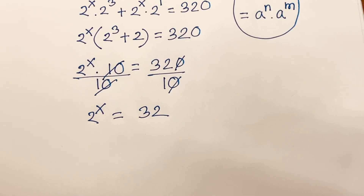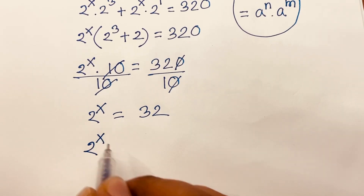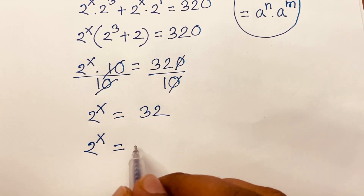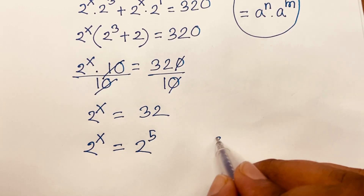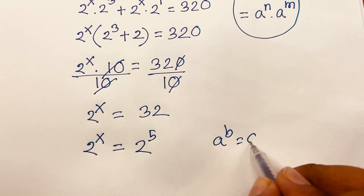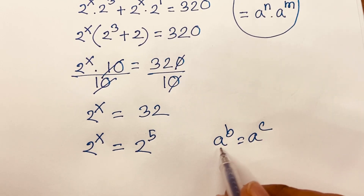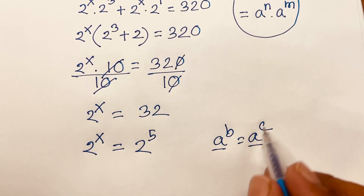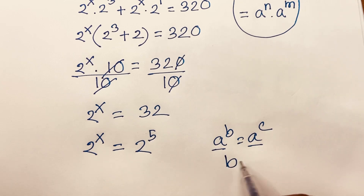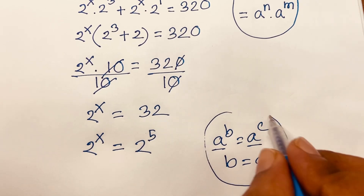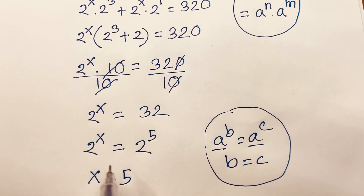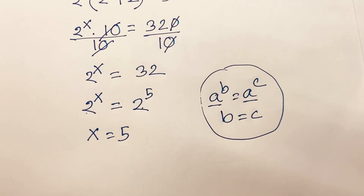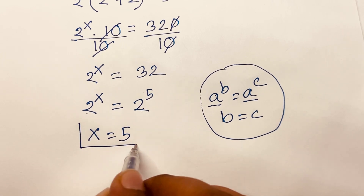We can write 32 as 2 to the power 5. We know that if a to the power b equals a to the power c and the bases are the same, then the exponents are equal, so b equals c. Therefore, x is equal to 5.